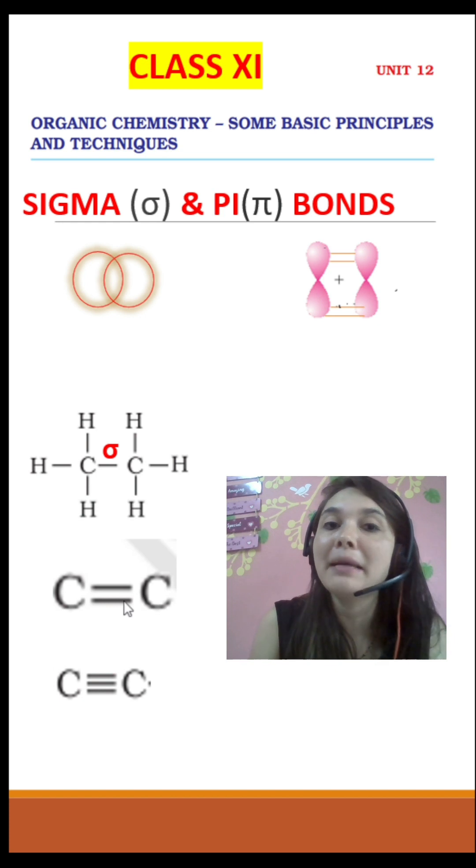Now let's take second example. Here single bond, that means it is a sigma, and whatever remaining, they are pi bond, right.